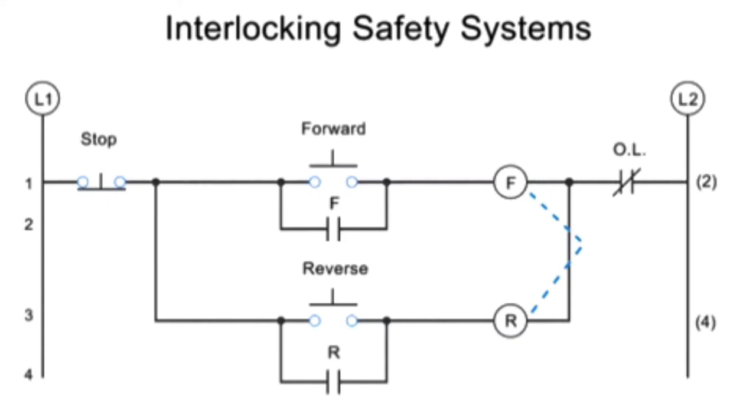The most basic level of interlocking systems is a mechanical interlock. A mechanical interlock is a physical lock that prevents the forward and reverse contactors from being engaged at the same time.